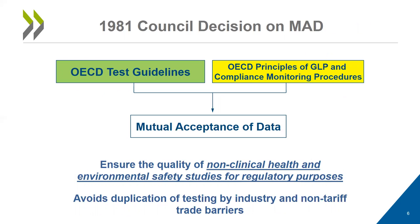In 1981, the Council put into place the initial decision on mutual acceptance of data. This articulated that if a study is conducted using OECD test guidelines and following OECD principles of good laboratory practice, then there would be mutual acceptance of data. This was put into place to ensure the quality of non-clinical health and environmental safety studies for regulatory purposes, and it also avoids duplication of testing by industry.